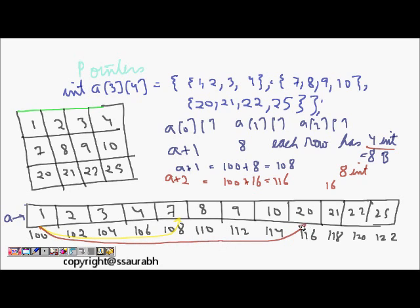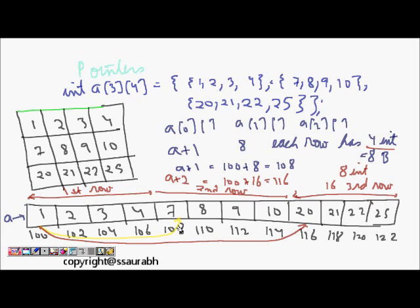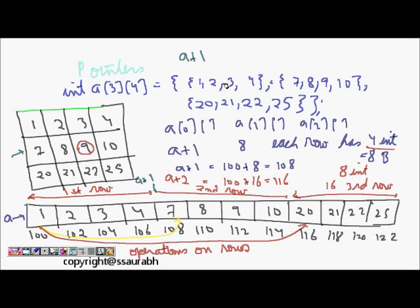So we can see the first row spans from address 100, the second row starts at 108, and the third row starts at 116. This now becomes much clearer. That was operations on rows. But what about accessing a specific element — let's say I want to access the value 9, which is the third column in the second row. I can access the second row by doing A plus 1, which moves me to address 108.